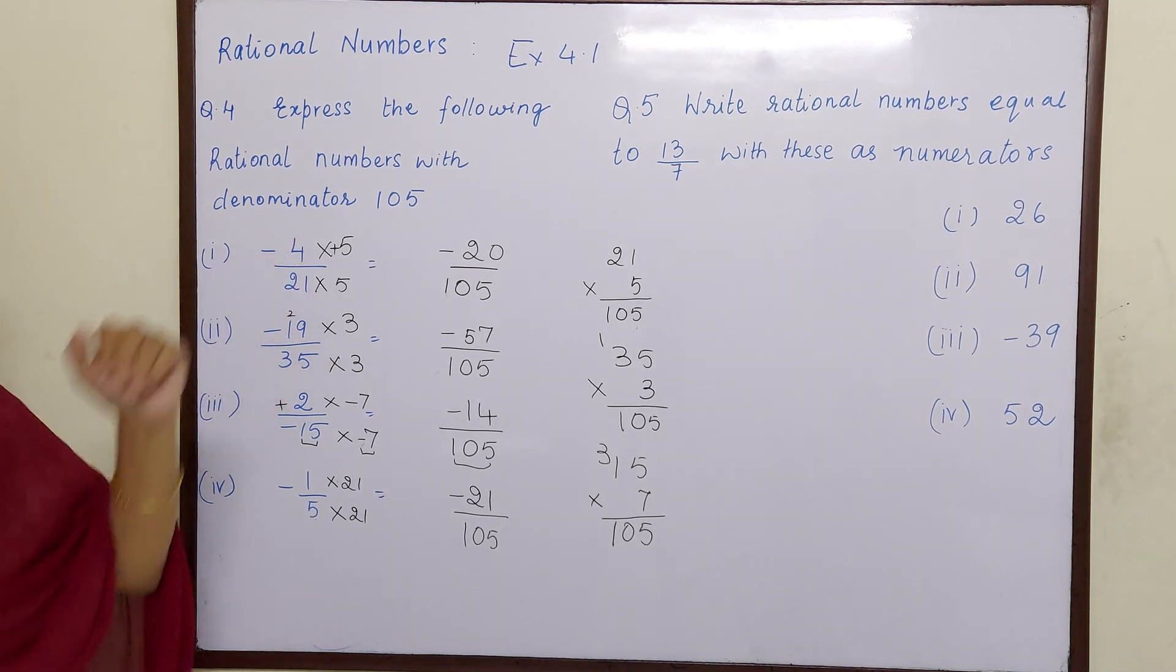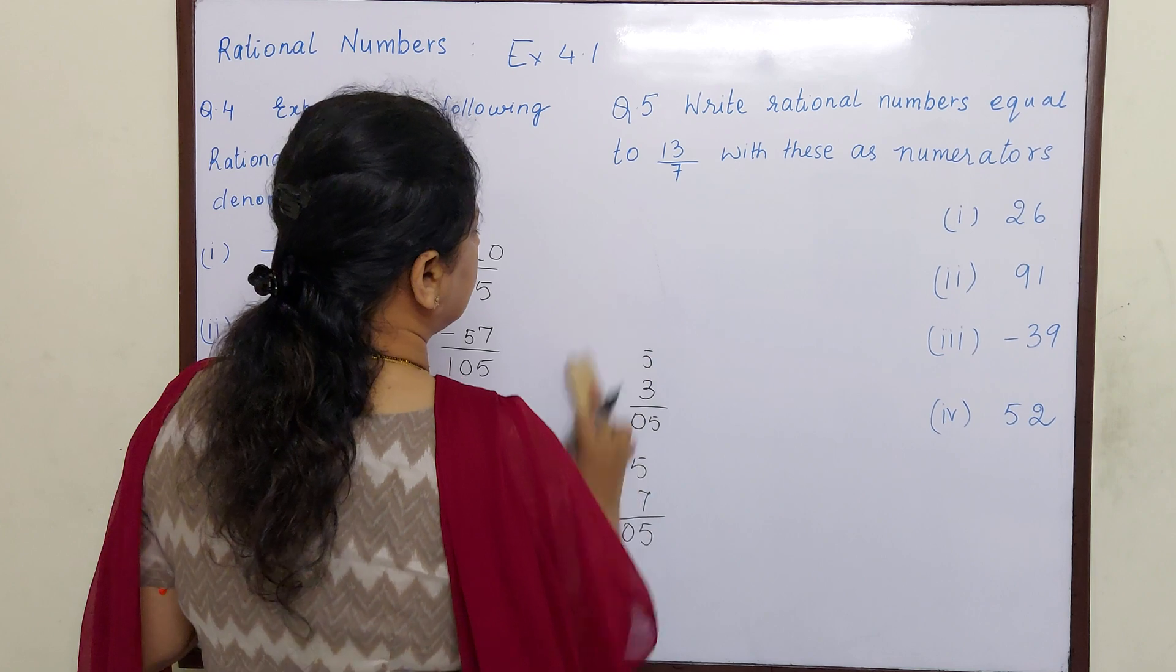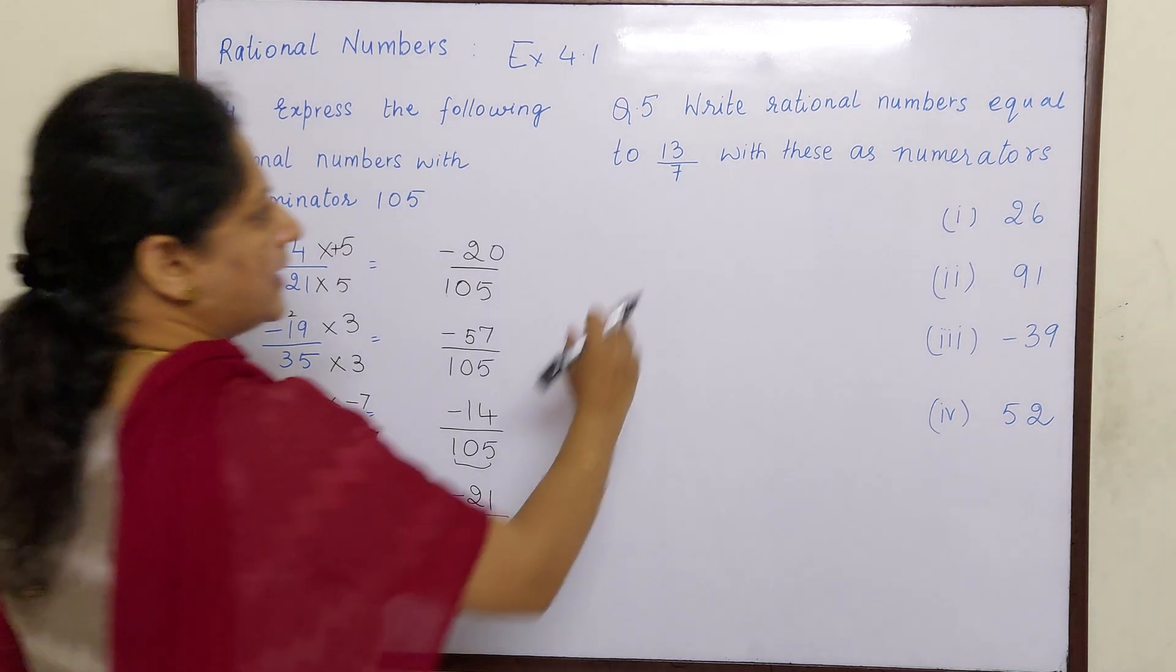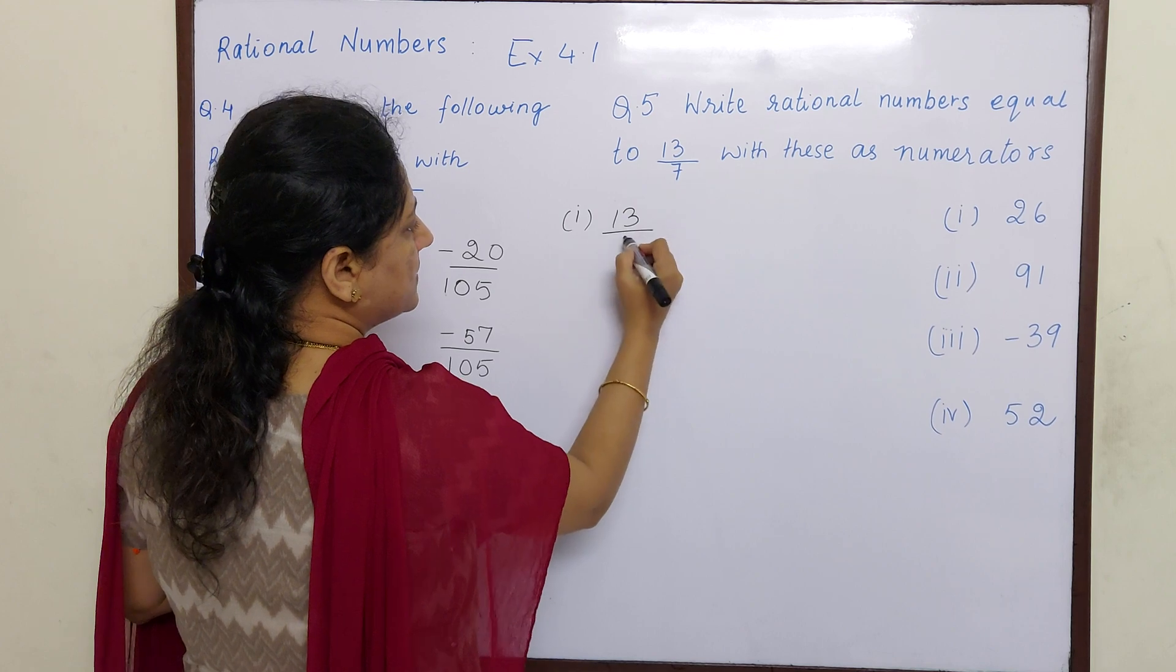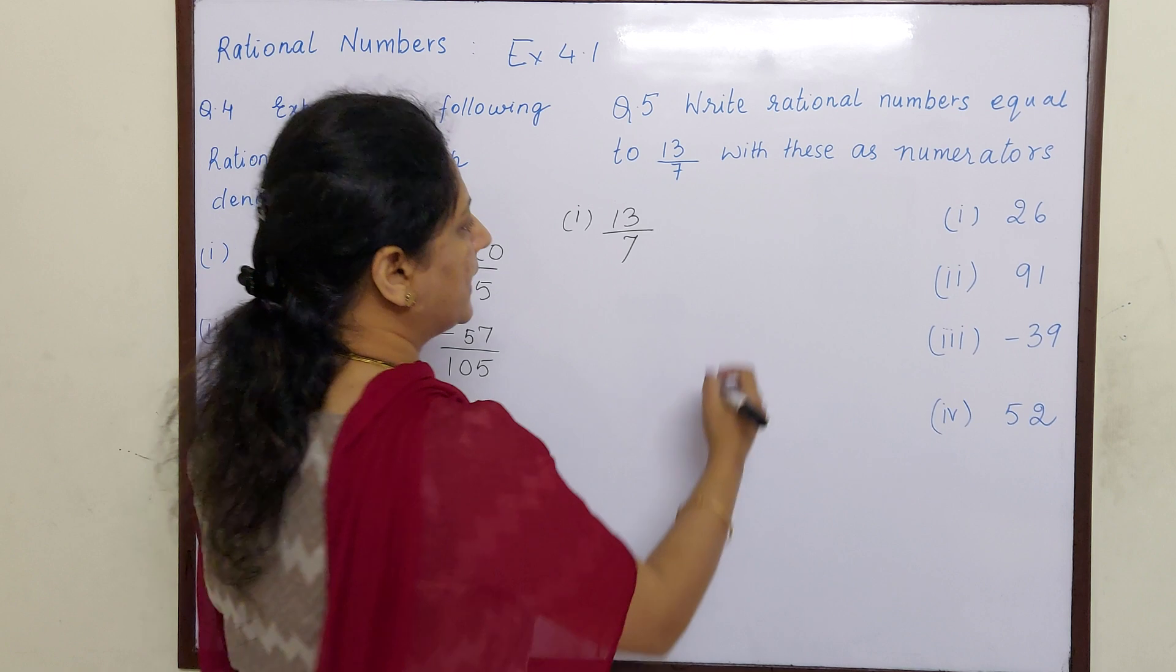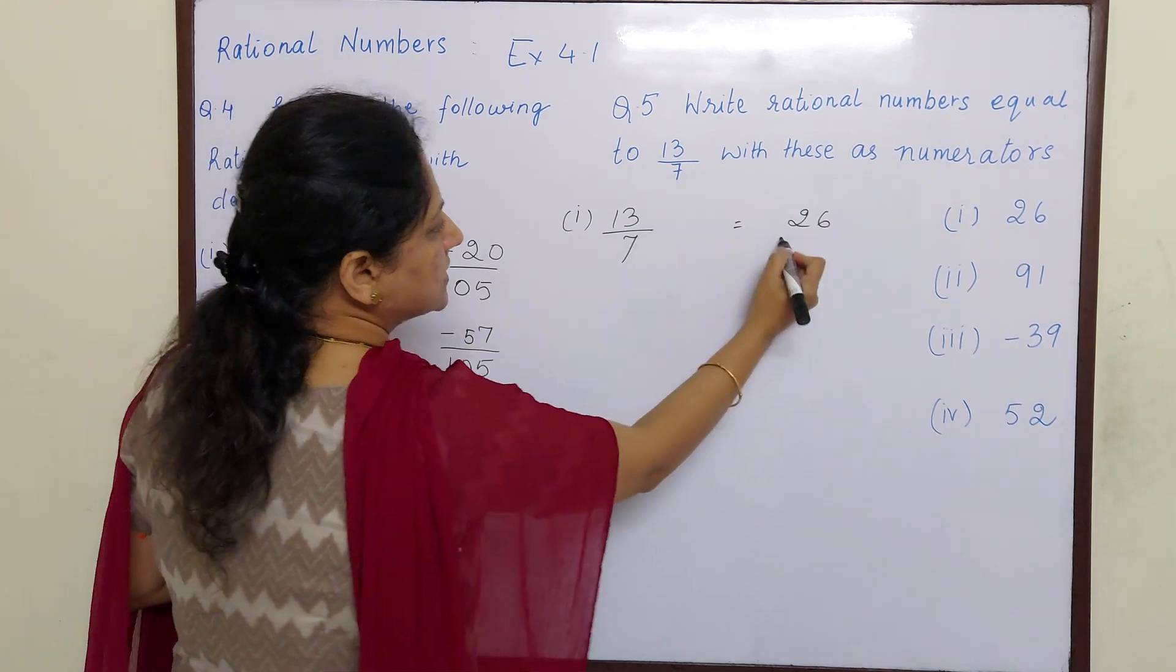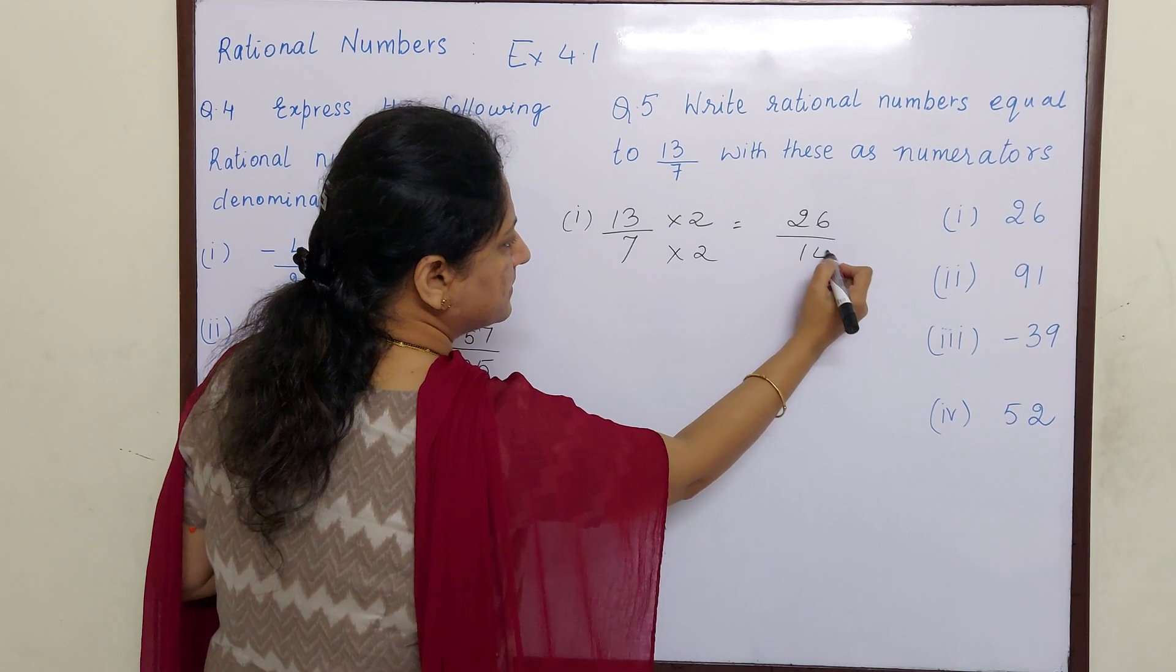Hope you understood children. Let us go to the next sum. Write rational numbers equivalent to 13 by 7 with these as numerators. Now that means they have given us the question. This question is same. This rational number is not going to change. But the numerator has to be converted to 26. So here numerator space it will be 26. So 13 twos are 26. Right? So 7 twos are 14. So this is simple sum.